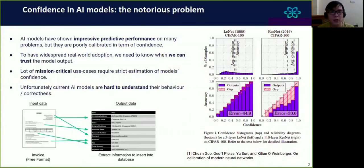Let's begin with confidence in AI models, some notorious problems in current AI research. AI models have shown impressive predictive performance on many problems, but they are poorly calibrated in terms of confidence. This problem can be illustrated in figure one. You can see that for modern architecture such as ResNet, the average confidence of the model is much higher than the accuracy. We can conclude that current AI models are overconfident on their outputs.